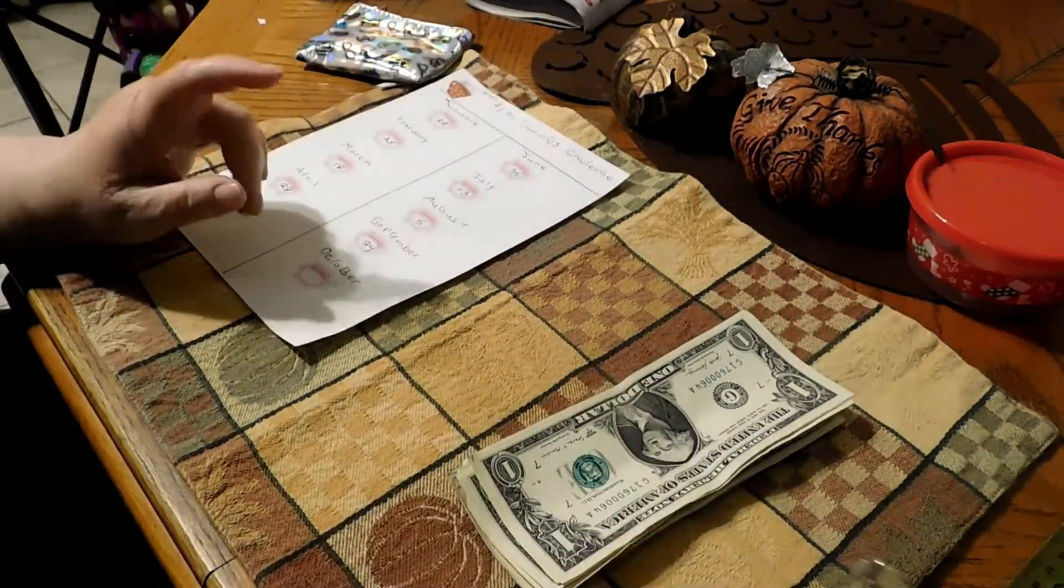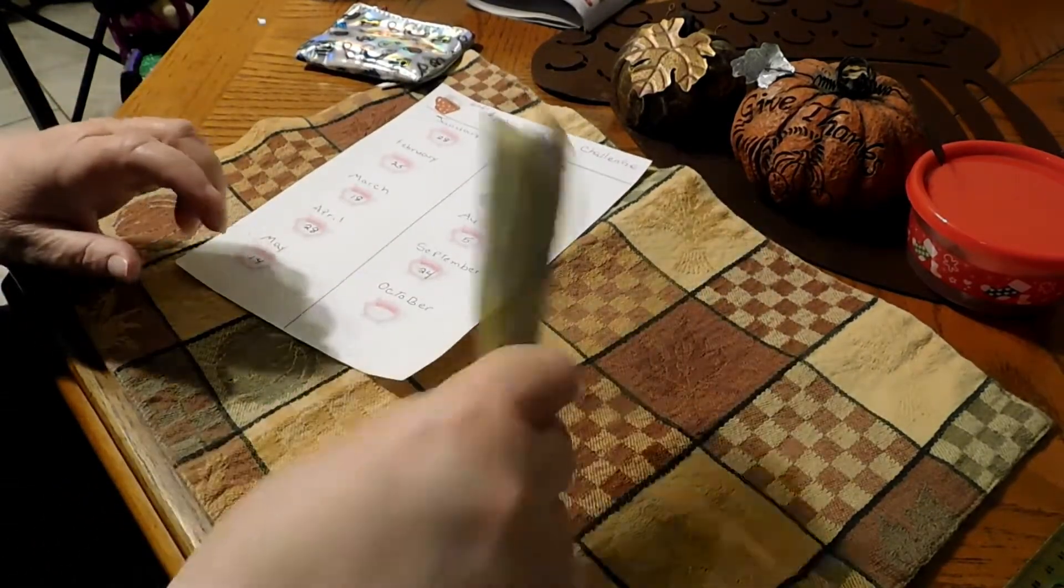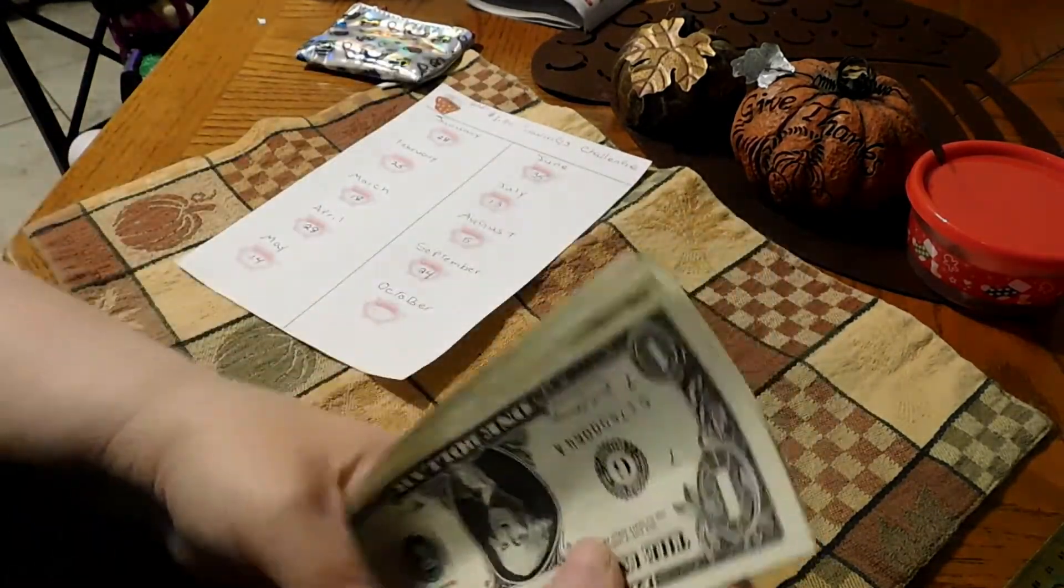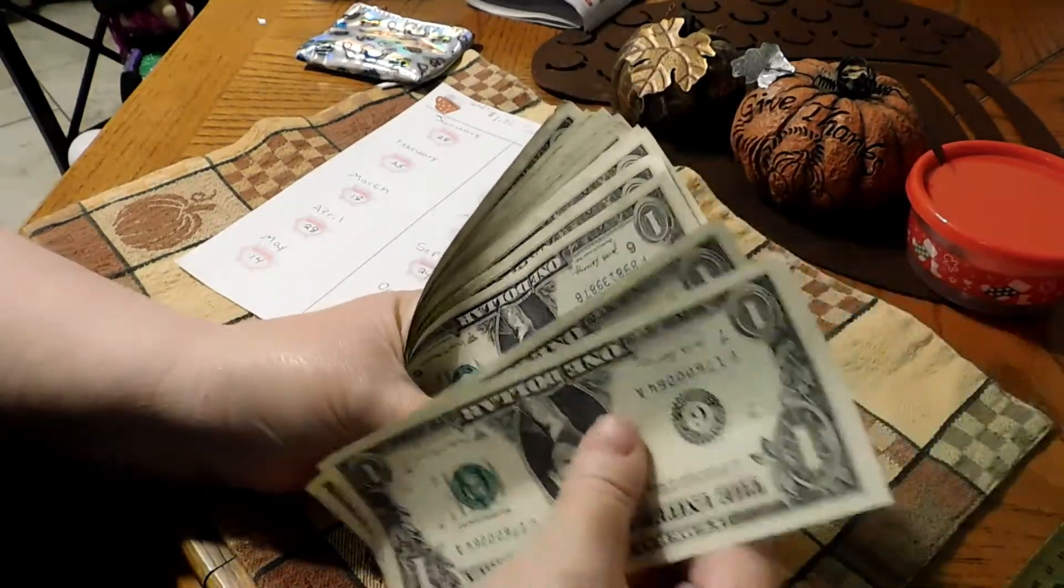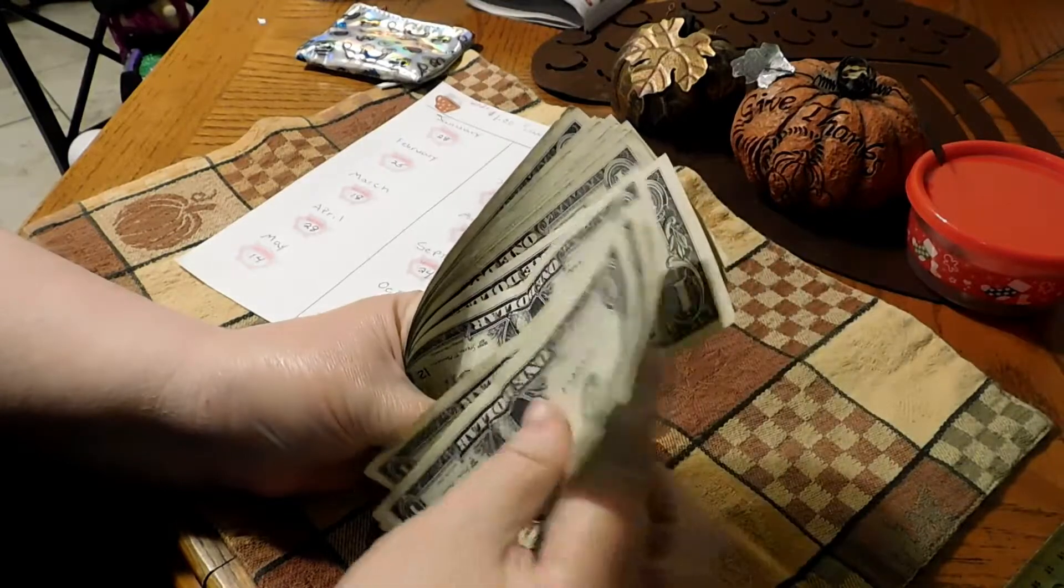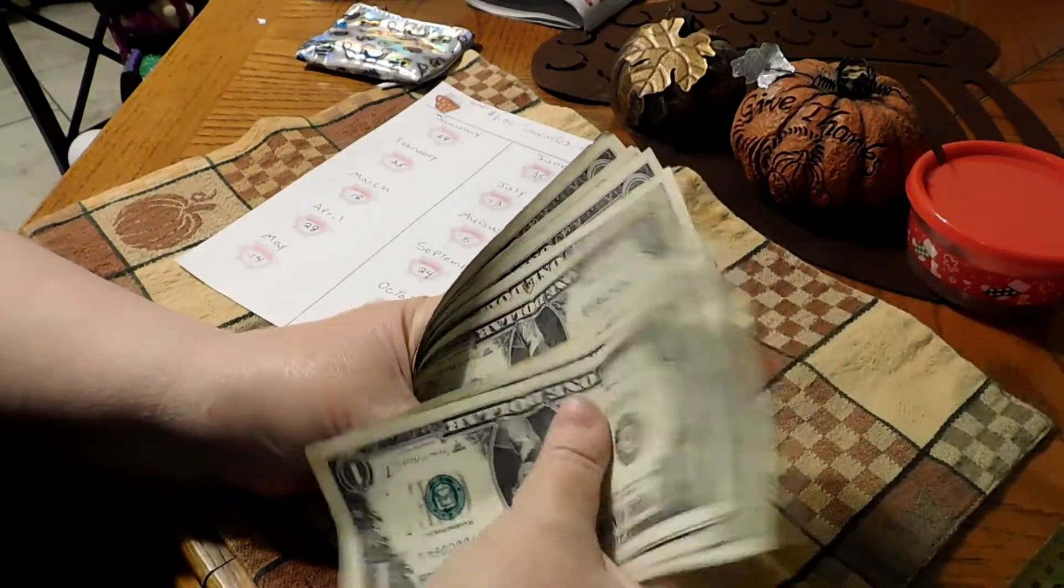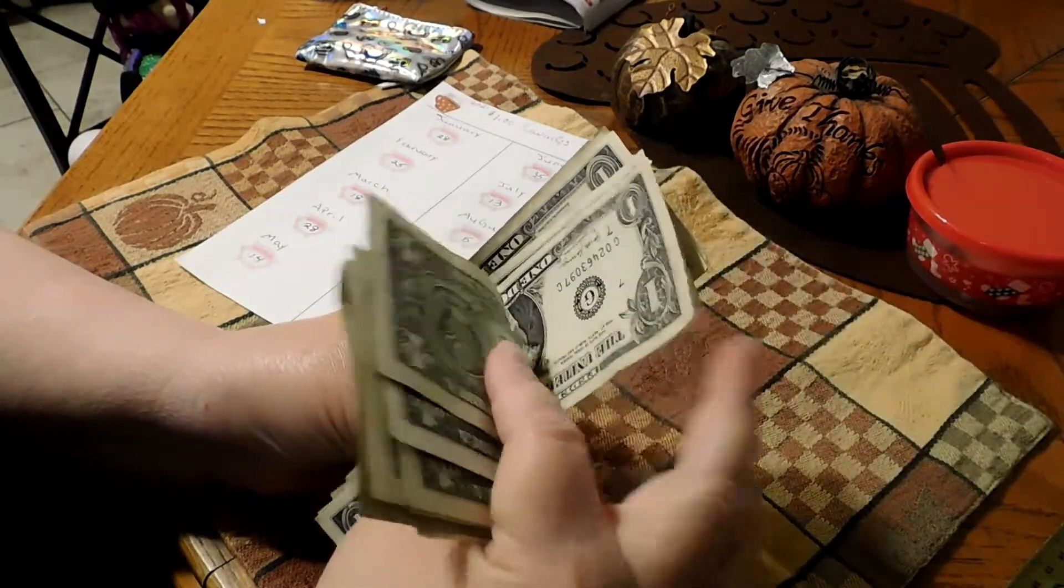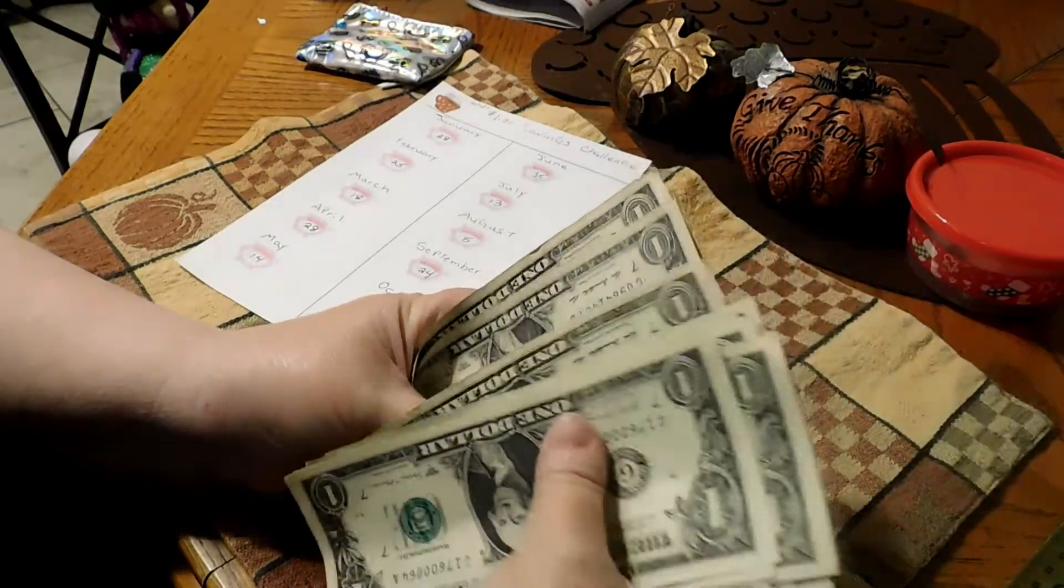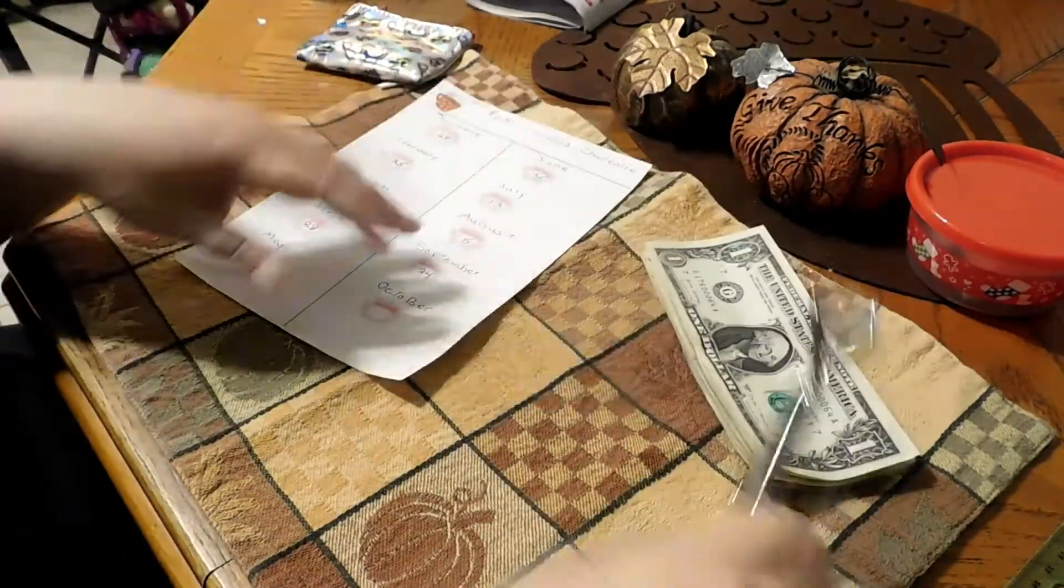So let's count our singles so we can write it into our October pig bank here. So we have 1, 2, 3, 4, 5, 6, 7, 8, 9, 10, 11, 12, 13, 14, 15, 16, 17, 18. Wow, $18.